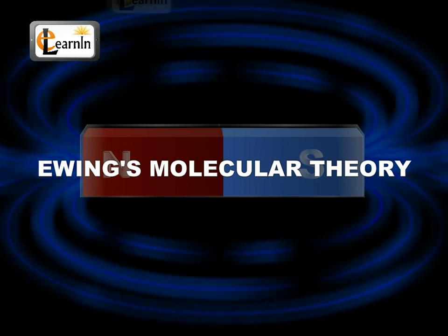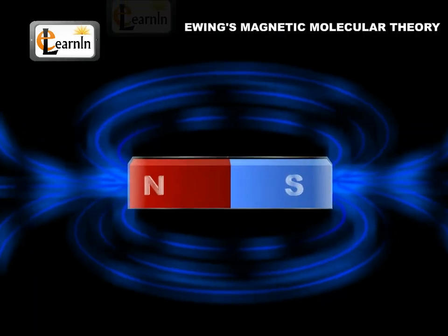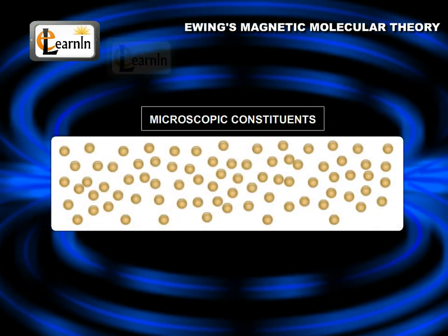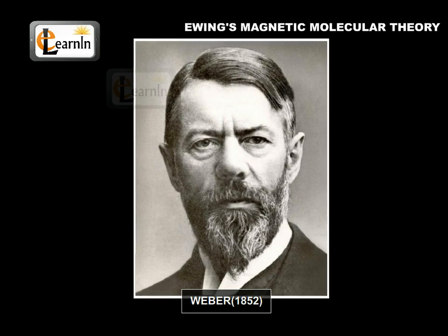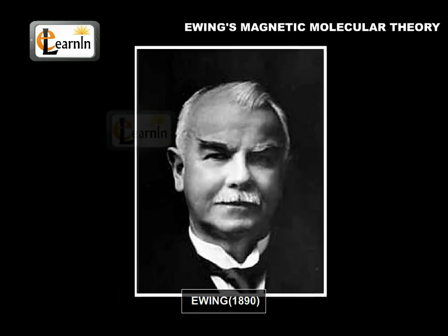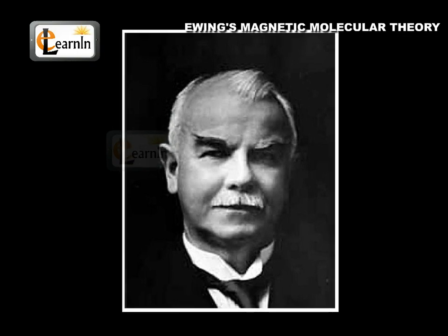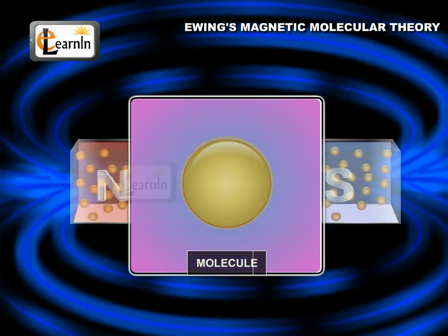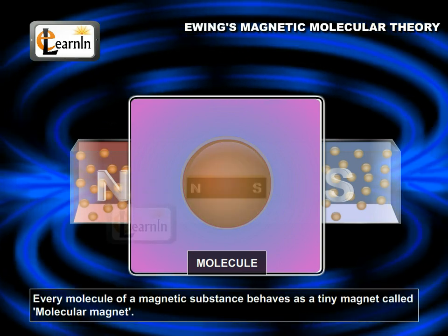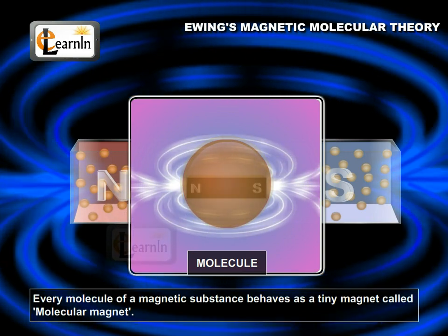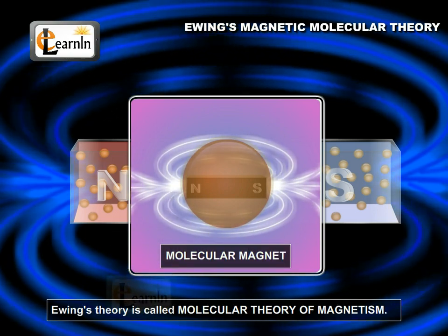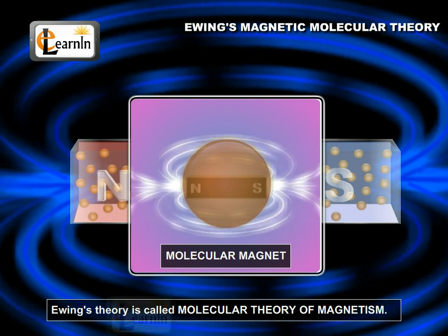Ewing's Molecular Theory. The idea that magnetism of a substance originates in the microscopic constituent of matter was first proposed by Weber in 1852 and was later developed by Ewing in 1890. According to Ewing, the microscopic constituent is a molecule. Every molecule of a magnetic substance behaves as a tiny elementary magnet, called a molecular magnet. Therefore, Ewing's theory is called the molecular theory of magnetism.